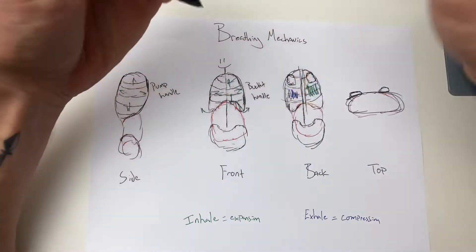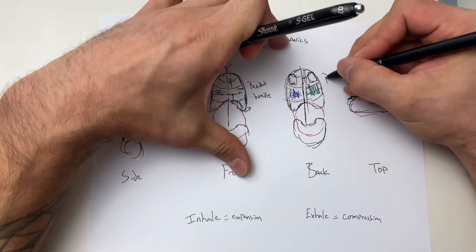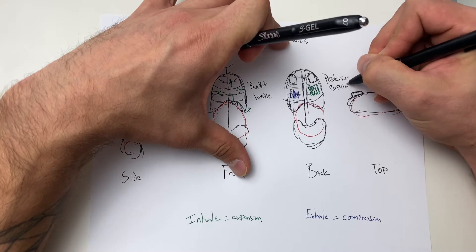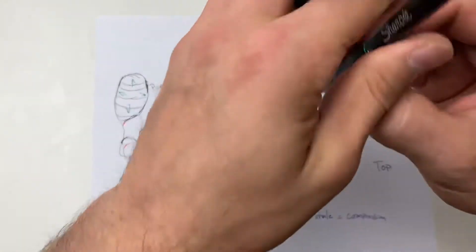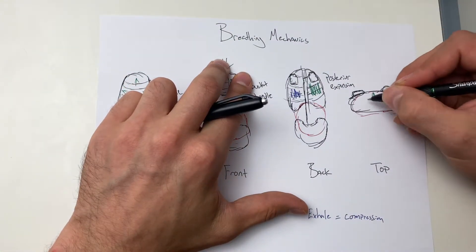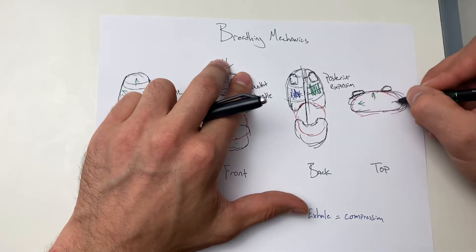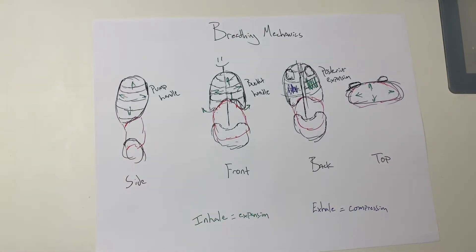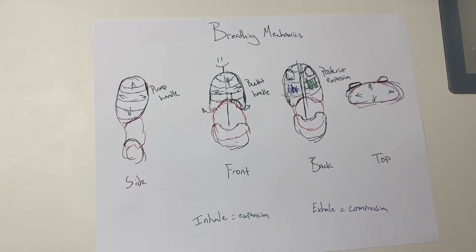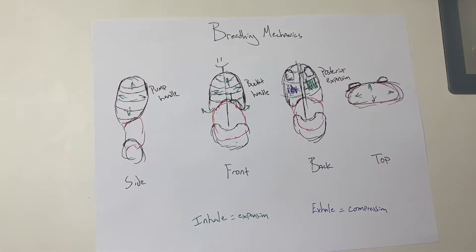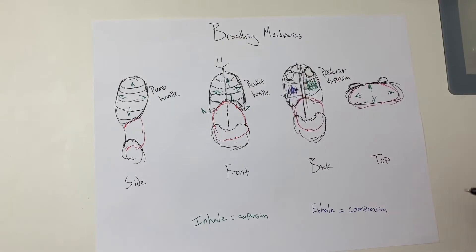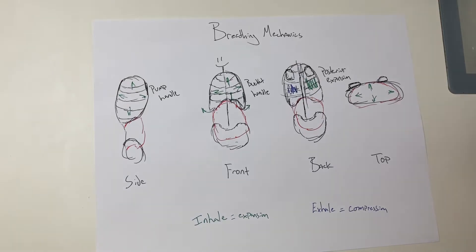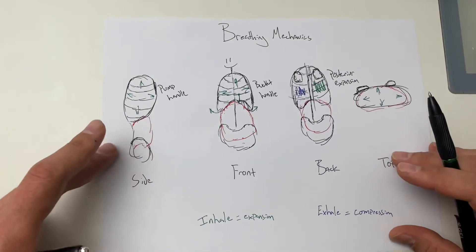And then I forgot this other one. We need good posterior expansion. We need air going into the back. We need air going in 360 degrees. So now you can start to look at when people take a deep breath, do they have these three things? And if not, we then know from an exercise selection standpoint, we need to put them in positions that will elicit the things that we're looking for.